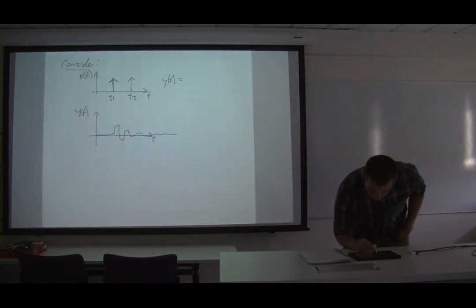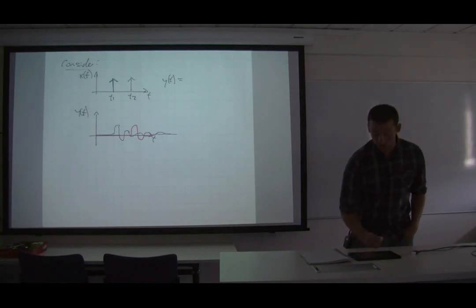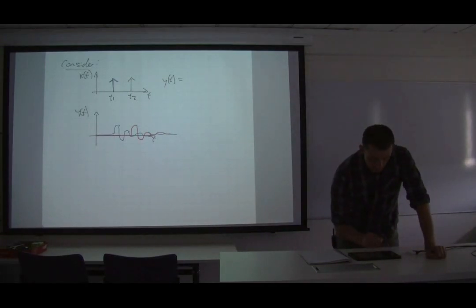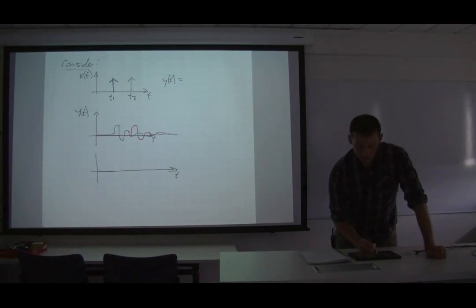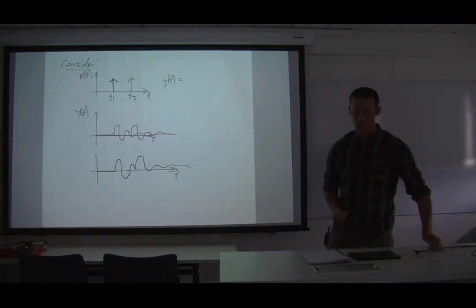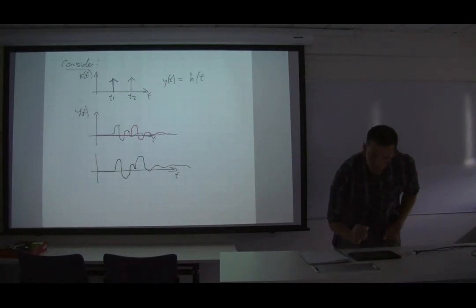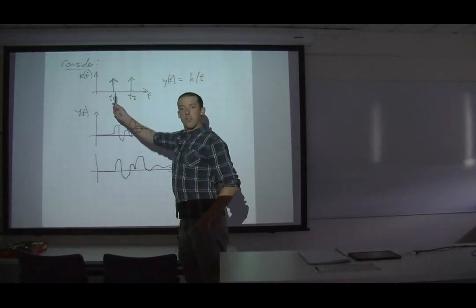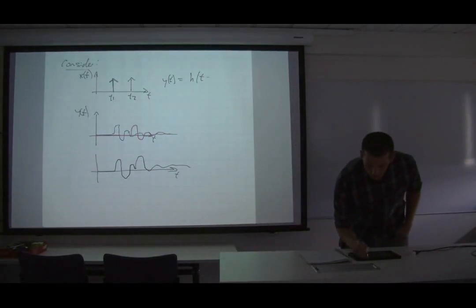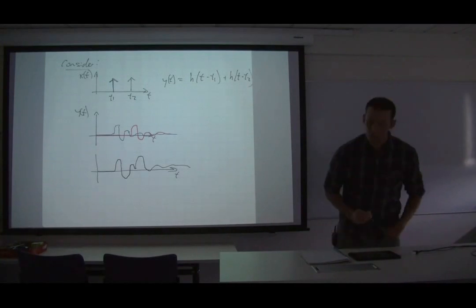The result is the superposition of both responses. The first impulse response is delayed — it doesn't start until T1, so we subtract T1. Then we have the impulse response again delayed to T2. So the output is H of T minus T1 plus H of T minus T2.